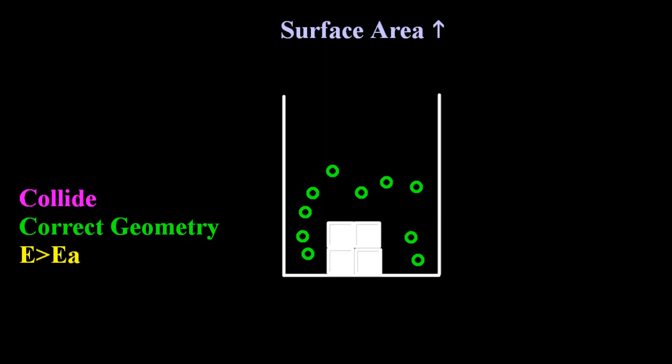Next is surface area. If I increase the surface area, that's like powdering something up. Now, you can see that the reactants can now get inside to where they couldn't get before. Get right inside that white solid there. So there's going to be more collisions now per unit time. Geometry unchanged.